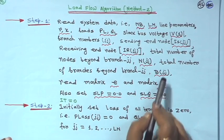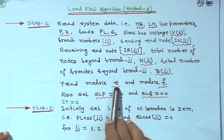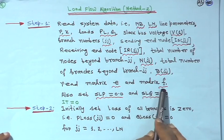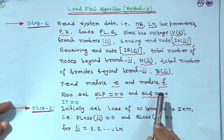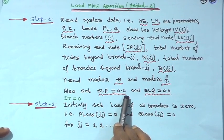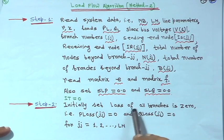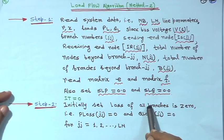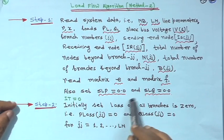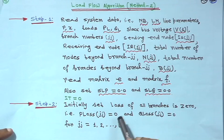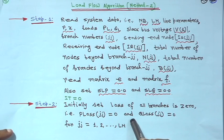Also read matrix C, same as before. But unlike the previous algorithm, matrix F was not there — you have to read this one also. Initially, total power loss is set to 0 for convergence criteria, and SLQ is equal to 0. I will show only 2 iterations, so the convergence cannot be fully demonstrated here.